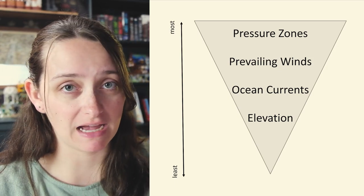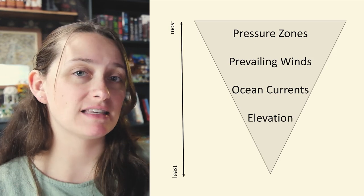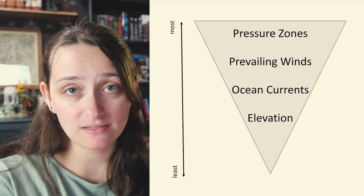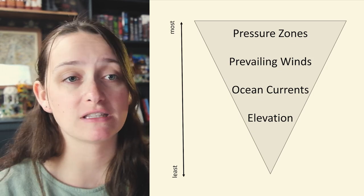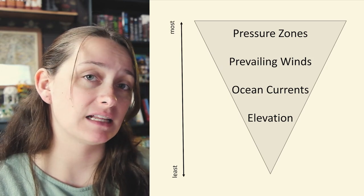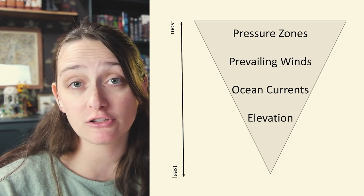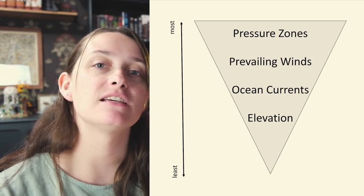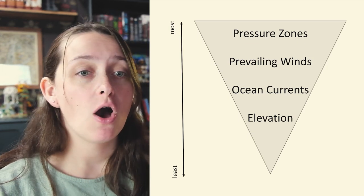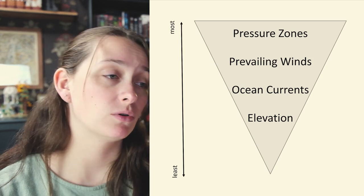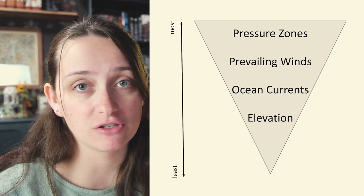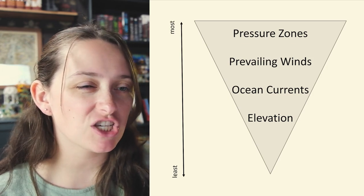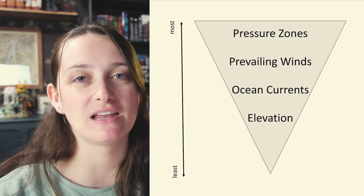There are four main factors that affect precipitation, in order of most impactful to least. First, pressure zones — the most impactful. Low pressure zones where air is rising will tend to be wet, and high pressure zones where air is sinking will be dry. Second, prevailing winds. Winds carry moisture from oceans to land, so onshore winds blowing from sea to land bring more precipitation particularly to the coast, while offshore winds blow drier air from the land interior. Third, ocean currents: warm currents bring more precipitation while cold currents bring less, most affecting coastal regions.